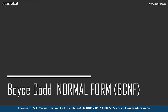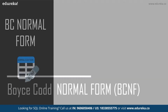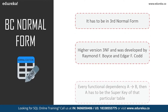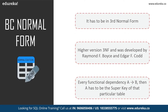The next normal form is Boyce-Codd normal form, also known as 3.5 normal form. It is the higher version of third normal form and was developed by Raymond F. Boyce and Edgar F. Codd to address certain types of anomalies not dealt with by third normal form. The table must first satisfy third normal form. In Boyce-Codd normal form, for every functional dependency A → B, A must be the super key of that table. A super key is a group of single or multiple keys which identifies rows in a table.